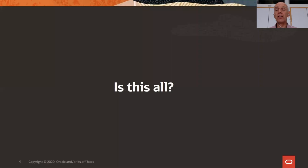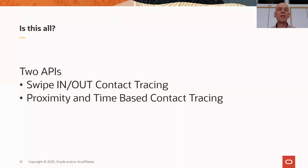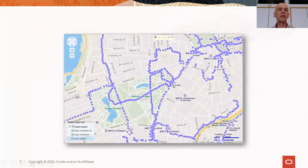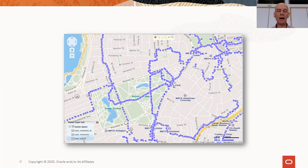Now, did you sign up for this webinar just to hear that Oracle has a higher-level function for badge-swiping contact tracing? Of course not. We also have a second API, a little more sophisticated — one that takes into account location, proximity, and time. When you registered, you were probably expecting to look at GPS tracks or tracks from some other tracking system, which you can visualize on the map and analyze interactively: which user has been close enough for long enough to which other user.